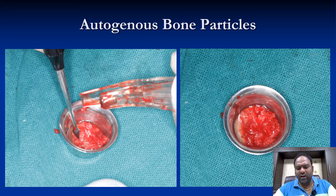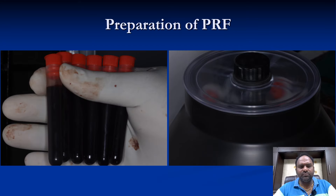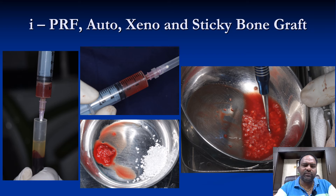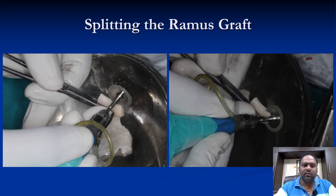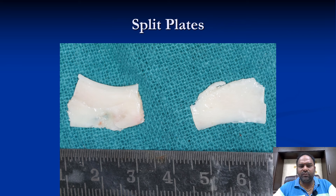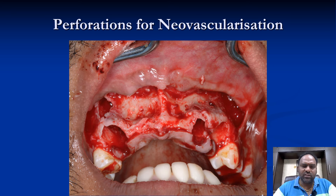We mixed the autogenous bone particles with 50% autogenous bone and 50% xenograft, creating the graft mixture. We then did a splitting of the ramus bone such that the split plates would act as a membrane. We made some perforations in the bone to allow for neovascularization of the bone graft.